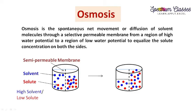Reverse osmosis is not a spontaneous phenomenon. In reverse osmosis, movement goes from low water potential to high water potential, or from high solute side to low solute side. For example, if water is contaminated with heavy metals, we forcefully provide energy to the system so that solvent molecules move from the high solute concentration side to the low solute concentration side. This is reverse osmosis, and it is an important objective asked in several competitive exams.